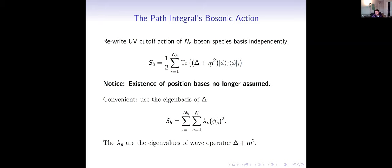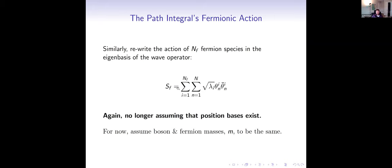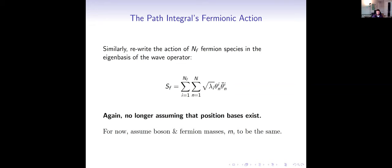We assume for simplicity that all bosons have the same mass and all fermions have the same mass — we will free ourselves from those constraints later. So now we have the bosons and fermions written in a way that no longer assumes a position representation. We can write the gravity action using a beautiful result by Hawking and Gilkey. When you have a Euclidean theory with an ultraviolet cutoff — we might imagine it chosen at the Planck scale to model a natural UV cutoff — Hawking and Gilkey showed that the number of eigenvalues of the Laplacian below the UV cutoff has an expansion in terms of the curvature, beginning with the Einstein-Hilbert action: a constant term plus a term multiplying the Ricci scalar plus higher-order curvature terms.